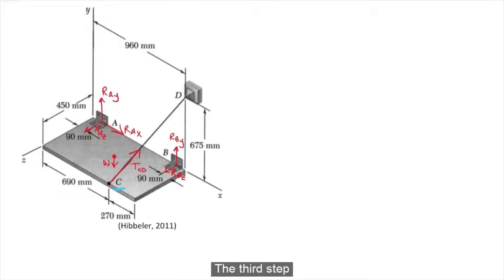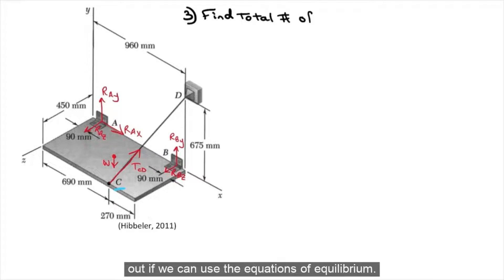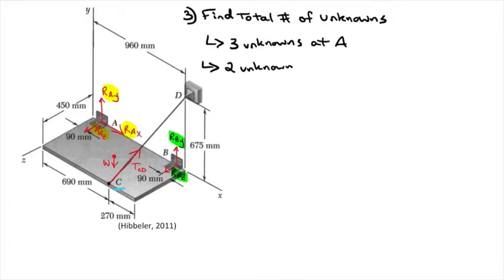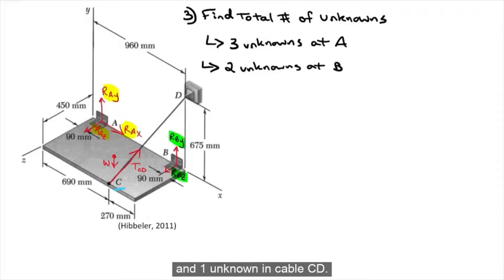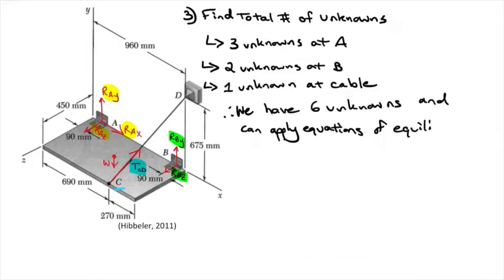The third step, we need to find how many unknowns we have in the problem and figure out if we can use the equations of equilibrium. We have 3 unknowns at hinge A, 2 unknowns at hinge B, and 1 unknown in cable CD. That gives us 6 unknowns, which means we can apply the 6 equations of equilibrium.